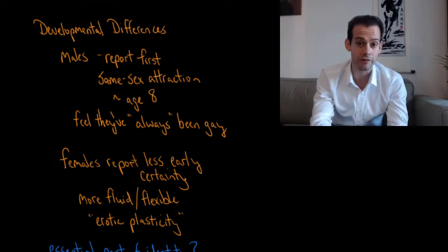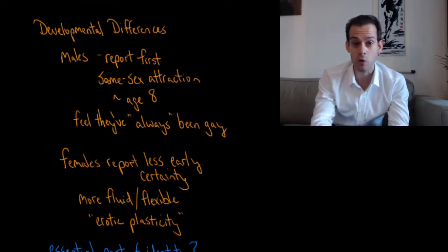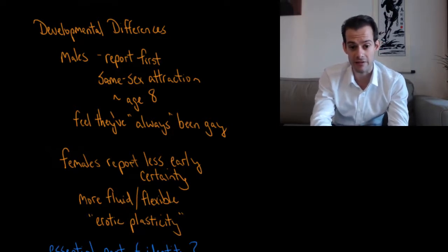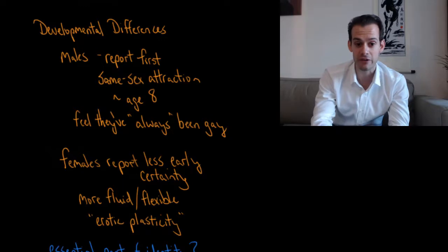They tend to have a more fluid or flexible approach to thinking about who they've been attracted to over time. This idea that females experience this is referred to as erotic plasticity—that females tend to be more plastic in their sexual orientation.